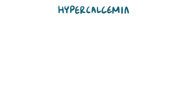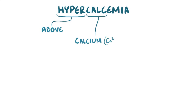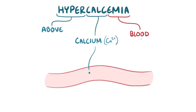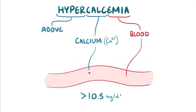With hypercalcemia, hyper means over, and kals refers to calcium, and emia refers to the blood, so hypercalcemia means higher than normal calcium levels in the blood, generally over 10.5 mg per deciliter.